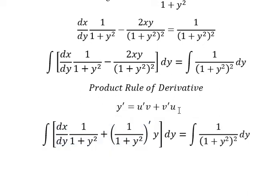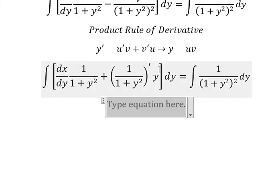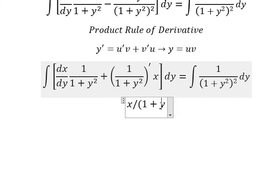That's about y in here. So if we do this integration we have u times v. So this one we have y. Oh sorry, x. We have x over one plus y square.